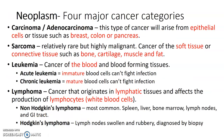Neoplasm — four major cancer categories. Carcinoma and adenocarcinoma arise from epithelial cells or tissues such as breast, colon, or pancreas. Sarcoma is relatively rare but highly malignant — it is the cancer of soft tissue or connective tissue, including bone, cartilage, muscle, and fat.